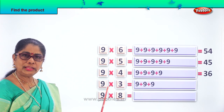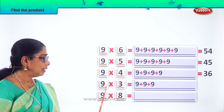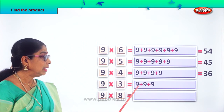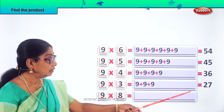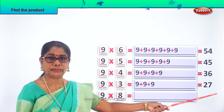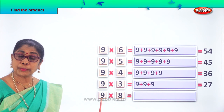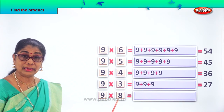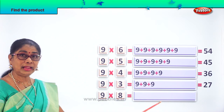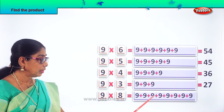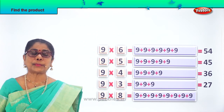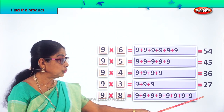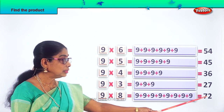Now find the product of 9 into 3. 9 three times: 9 plus 9 plus 9. And finally, find the product of 9 into 8. 9 eights — so you write 9 eight times: 1, 2, 3, 4, 5, 6, 7, 8. What is the product of 9 into 8? 9 eights are 72. What are 9 eights? 9 eights are equal to 72.